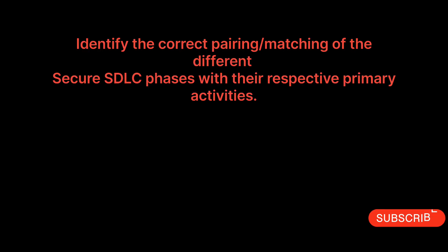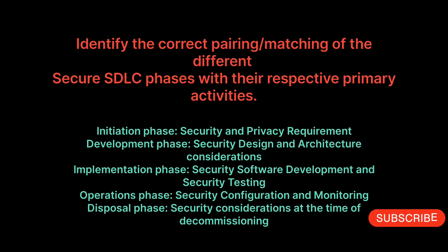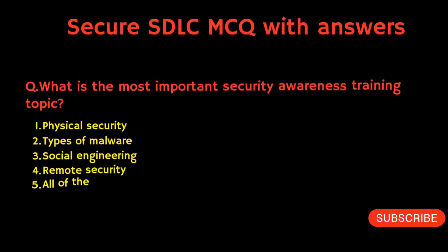The next question could be: identify the correct matching of the different Secure SDLC phases with their respective primary activities. There are four options. The answer is: initial phase — security and privacy requirements; development phase — security design; implementation phase — secure software development; operation phase — security configuration; disposal phase — security consideration.